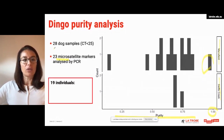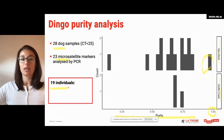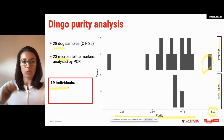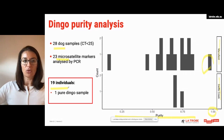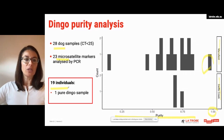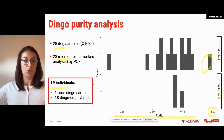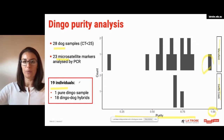Overall, out of these 28 samples, we were able to identify they belonged to 19 different individuals, meaning we had collected samples from the same individuals. We identified one pure dingo sample, and the others belonged to dingo-dog hybrid animals.